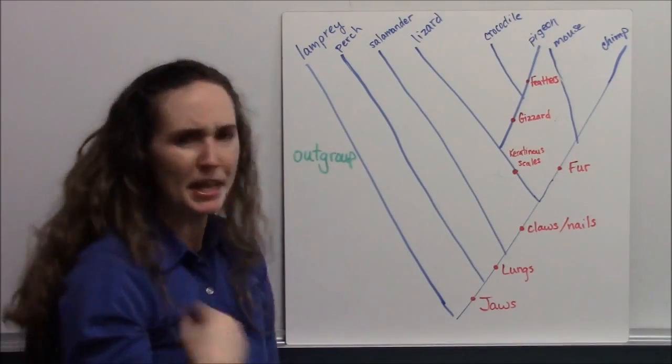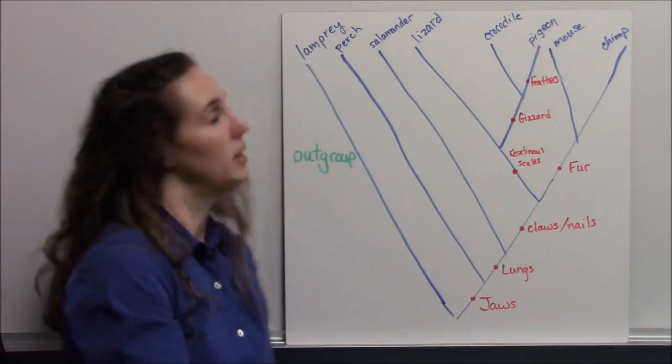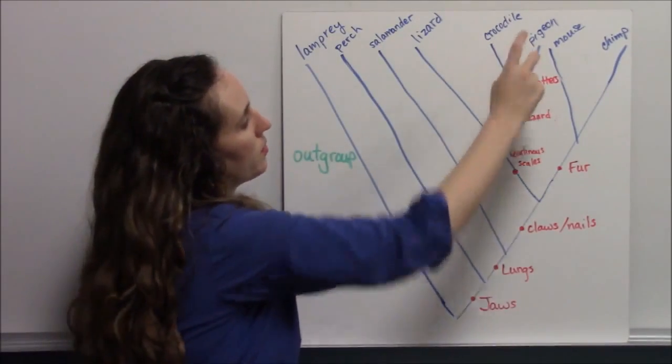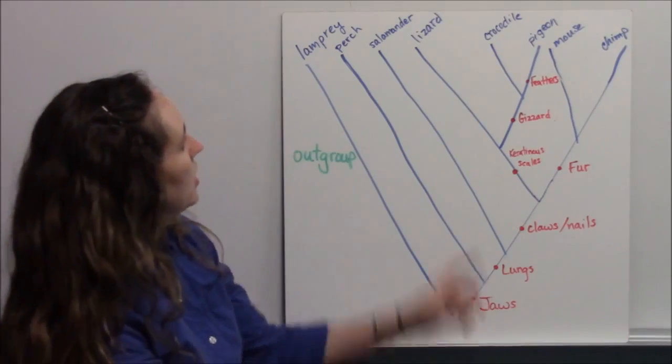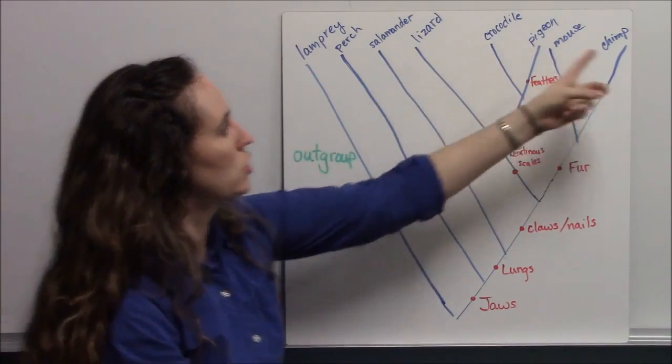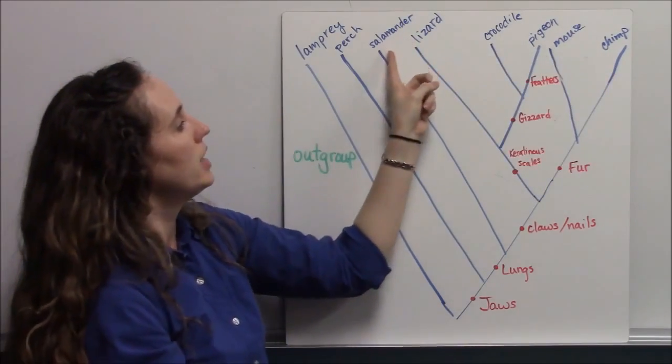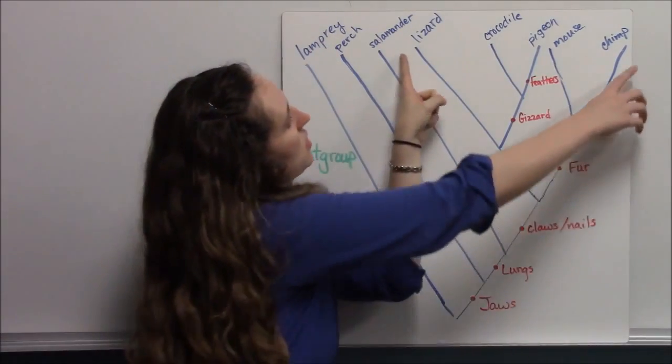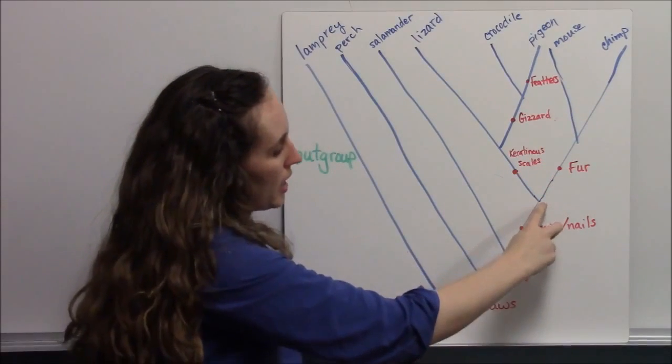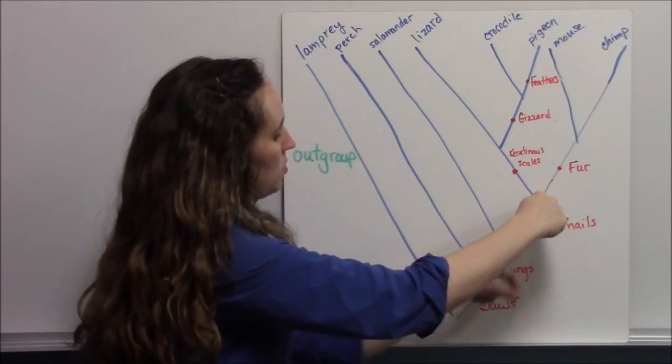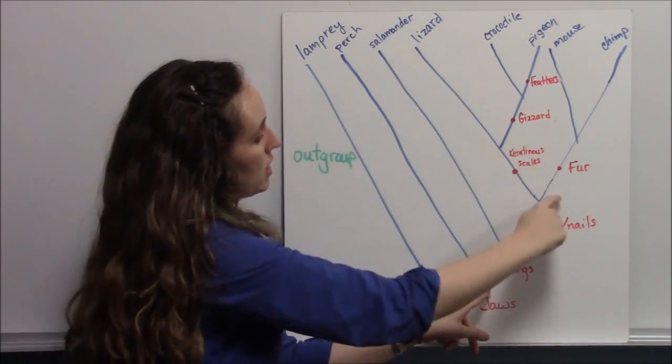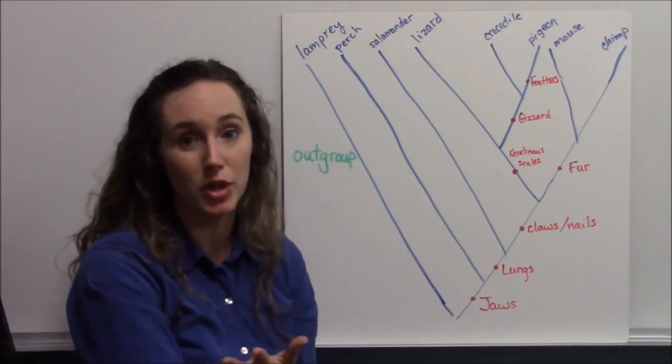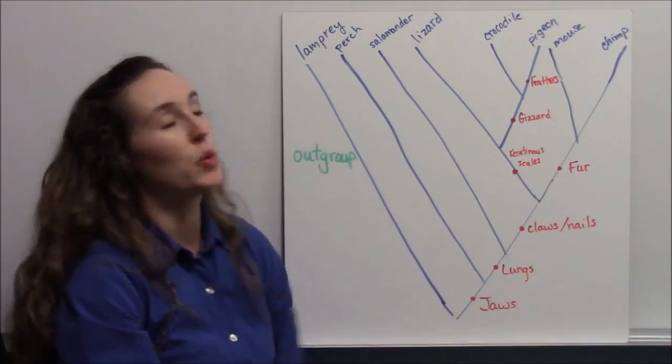Here's some of the conclusions you can make. You could say that crocodiles and pigeons are sister species. You could say that lizards and chimps are equally related to perch. But that's because lizards and chimps, if you look back at this node, this node is the same distance whether you're coming from lizard land or from chimp land. There are all kinds of conclusions that you could make about the relatedness of organisms within this phylogenetic tree.